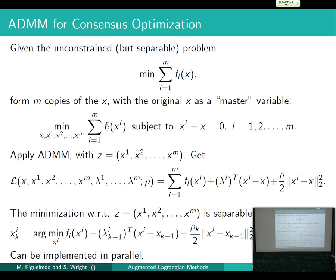This is not stochastic optimization — it deals with the whole F at every iteration. Stochastic optimization picks one fi per iteration; that's a separate topic. But this ADMM formulation gives a very natural way to parallelize: the expensive xi-minimization steps can be distributed across processors, while the master variable X update and lambda updates are done centrally and are cheap.